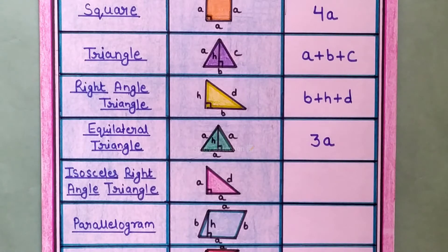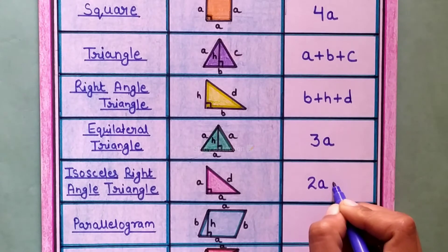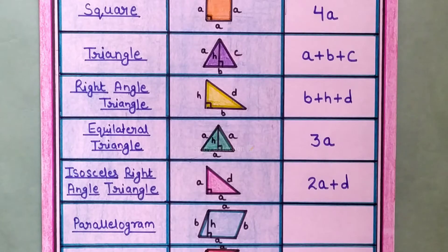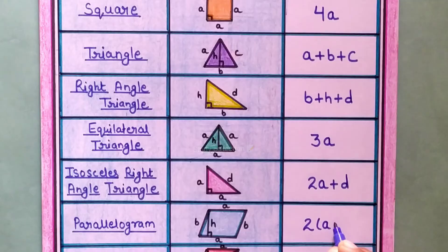Next is isosceles right angle triangle. Its perimeter formula is 2 into A plus D. Next is parallelogram. Its perimeter formula is 2 A plus B.